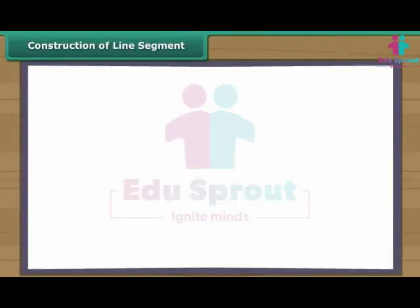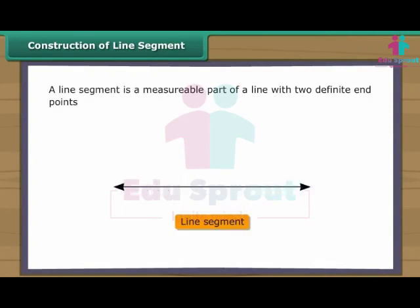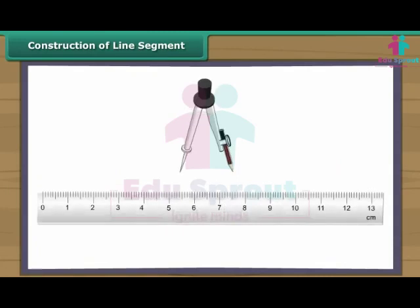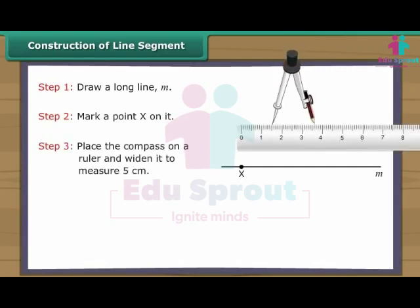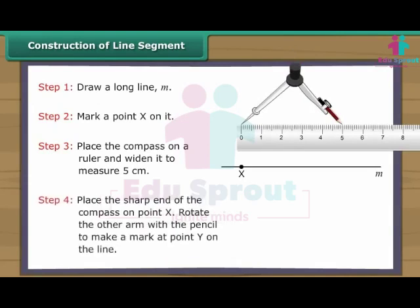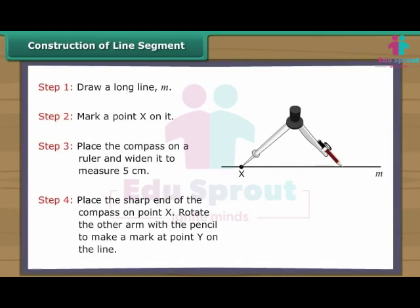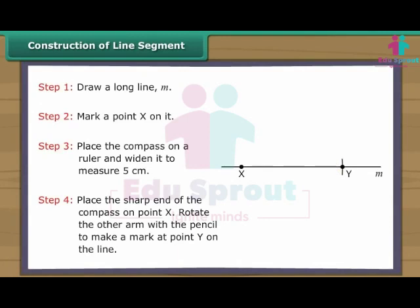Construction of line segment. A line segment is a measurable part of a line with two definite end points. We use a ruler and a compass to construct a line segment. Let us construct a line segment five centimetres long. Draw a long line M. Mark a point X on it. Place the compass on a ruler and widen it to measure five centimetres. Place the sharp end of the compass on point X. Rotate the other arm with the pencil to make a mark at point Y on the same line. We have a line segment XY which is five centimetres long.